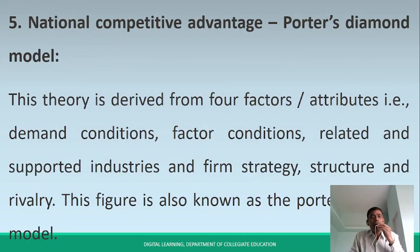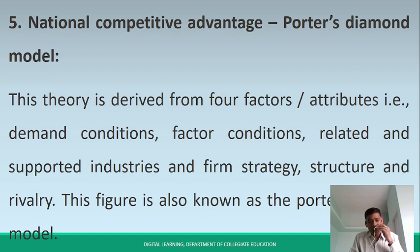The fifth theory is National Competitive Advantage Theory, also known as Porter's Diamond Model. National competitive advantage is derived from four factors: Demand Conditions, Factor Conditions, Related and Supported Industries, and Firm Strategy, Structure and Rivalry.